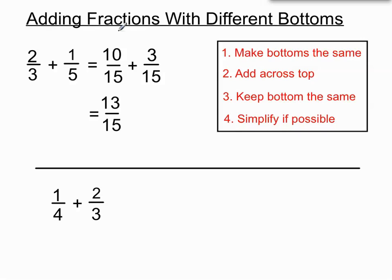So our step one is to make the bottoms the same. So I hope you're getting the hang of this, that the bottoms we're going to choose is to make them both out of 12, because 4 and 3 both go into 12. One quick way of finding a number they both go into is to multiply the two bottoms together, and use that number for your new bottoms.